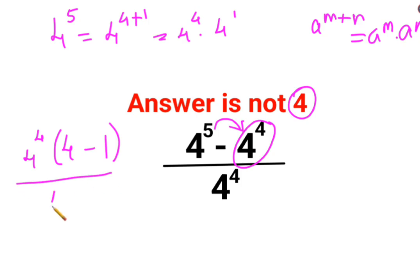Divided by 4 raised to 4, so this and this gets cancelled. The answer for this question is supposed to be 4 minus 1, which is just 3. I hope this is very clear to everyone. That's it for today, I will see you in the next video.